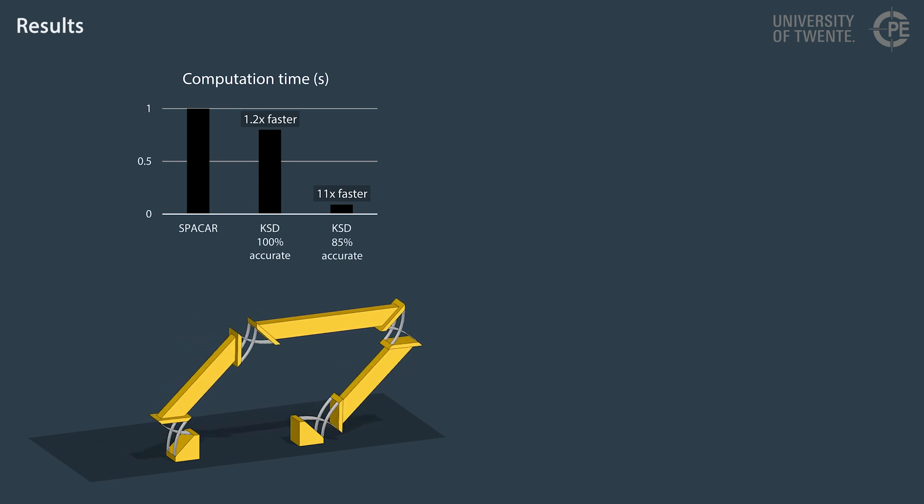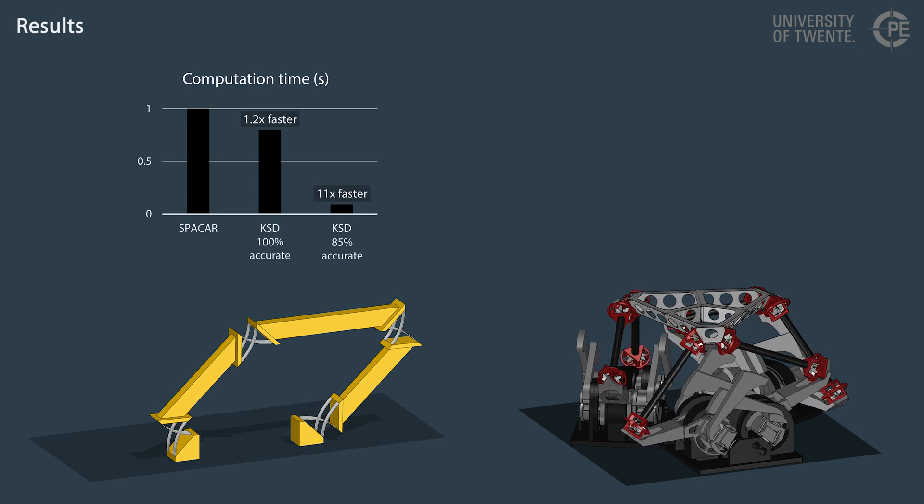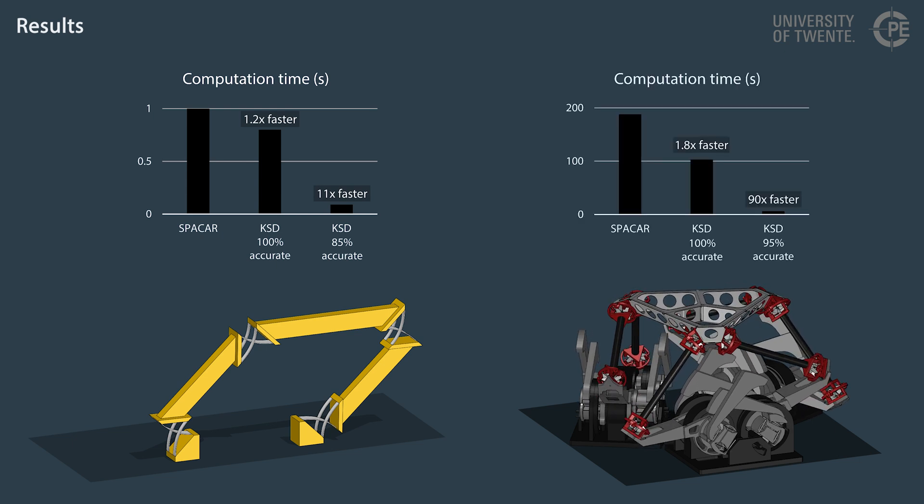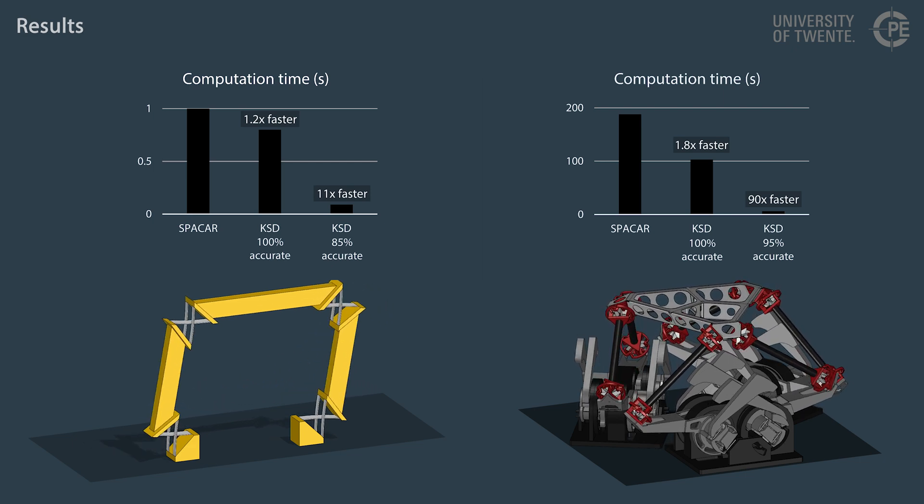For flexure mechanisms with many more elements, the improvement can be much more significant. For example, computing the deformation of the T-flex is up to 90 times faster.